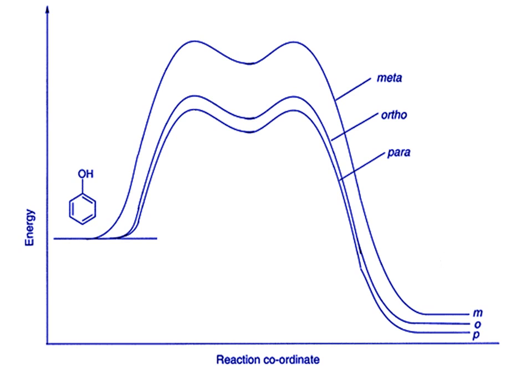If you think about this explanation, you see that we're actually using Hammond's postulate here by extrapolating from the stability of the intermediates to draw conclusions about the transition states leading to those intermediates, and therefore the relative rate of the different possible reactions.